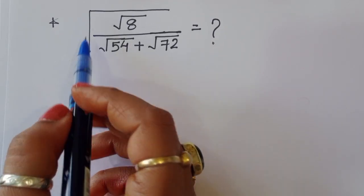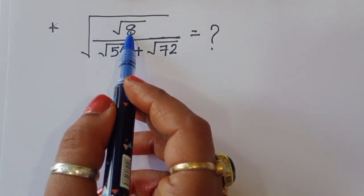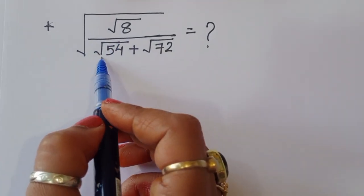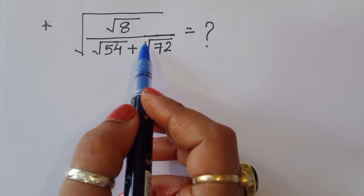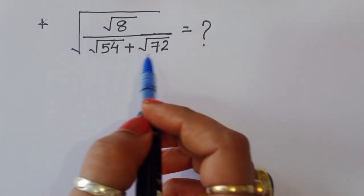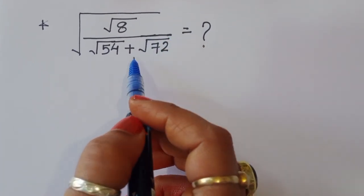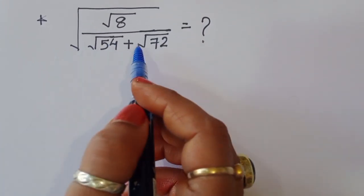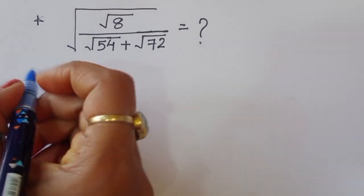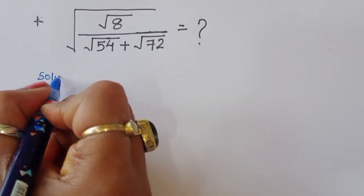The question given is: square root of 8 divided by square root of 54 plus square root of 72. We have to find the value of this expression.